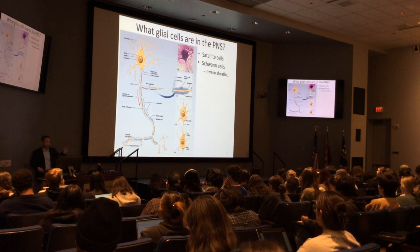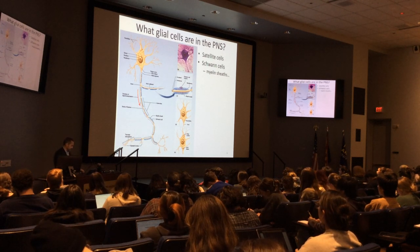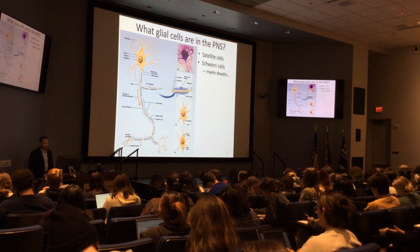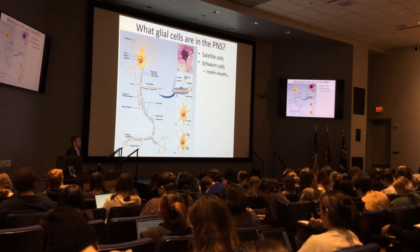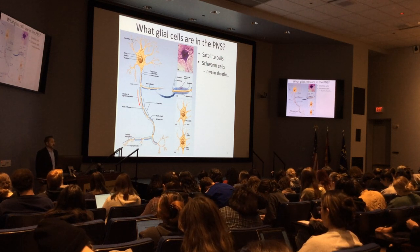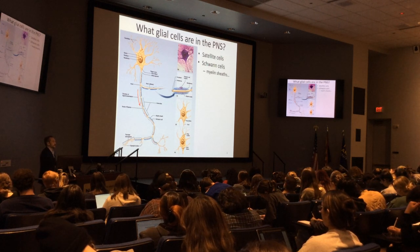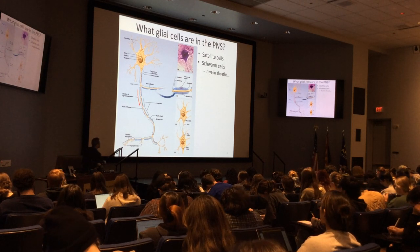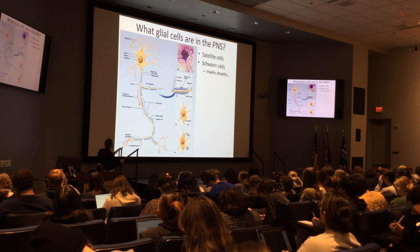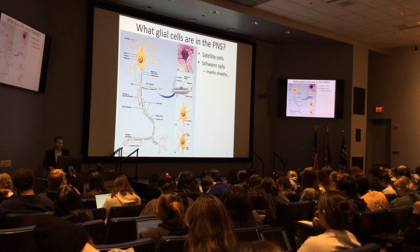In the peripheral nervous system, we only have two types of glial cells: satellite cells and Schwann cells. Satellite cells mimic astrocytes — they provide nutrition, support, and insulate the neuron soma, regulating the chemical environment metabolically. The Schwann cell creates myelinated sheaths in the periphery, like what the oligodendrocyte does in the central nervous system.